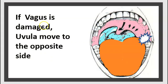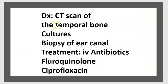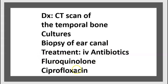If the vagus nerve is damaged, the uvula deviates to the opposite side. For diagnosis, we do a CT scan of the temporal bone with culture. We also make a biopsy of the ear canal, and we use intravenous antibiotics as treatment, like fluoroquinolone ciprofloxacin.